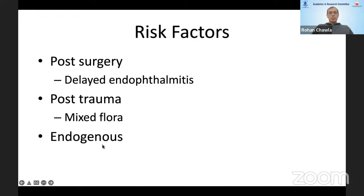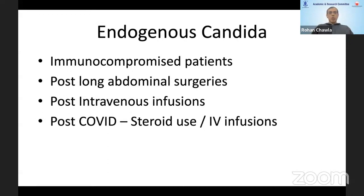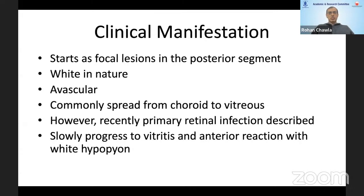Endogenous is what I would be restricting most of my talk on, mostly acquired from the systemic route. It is more common in immunocompromised patients or patients who have undergone long abdominal surgeries. In our country, even simple people getting drips for diarrhea, if not given with proper asepsis, can acquire candida infection from the intravenous route. We have recently seen some cases following COVID — whether due to IV infusions, steroids, or an overall immunocompromised state is yet to be fully determined.